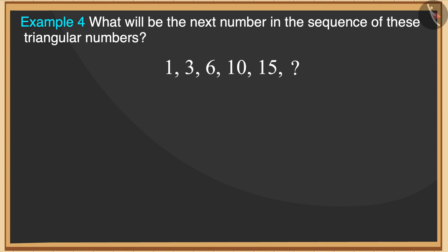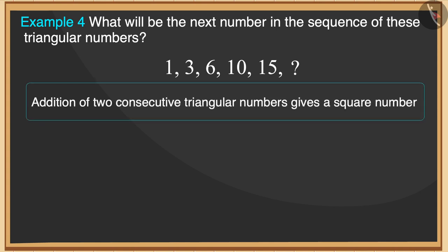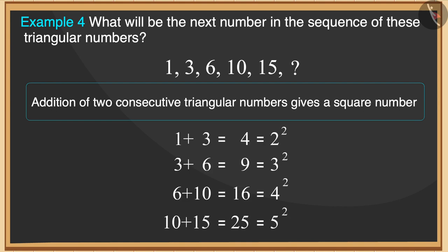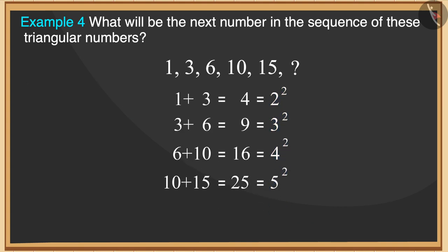We know that adding consecutive triangular numbers gives us a square number. Let us add them. Look at the square numbers of this sequence carefully. These are consecutive square numbers. The next square number of this sequence will be 36.